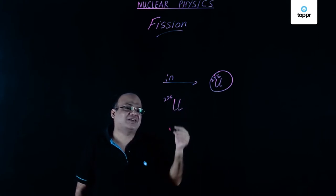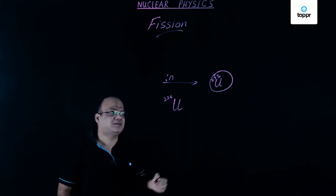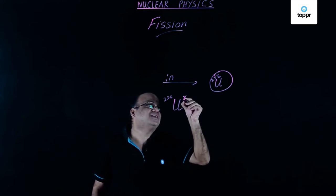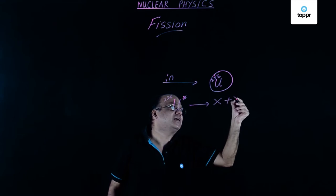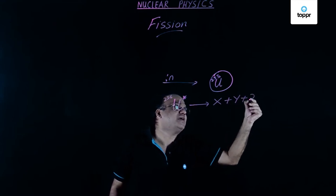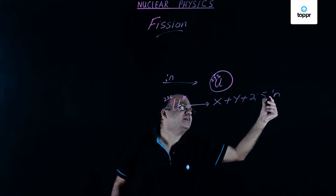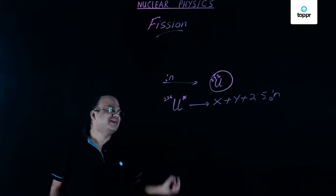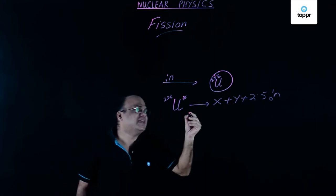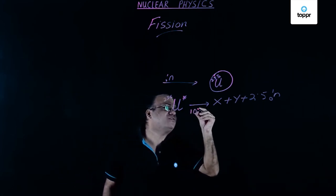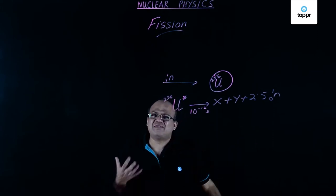This nucleus is unstable. It breaks into some fragment X plus fragment Y, and you get 2.5 neutrons on average. This takes place in 10 to the power minus 12 seconds — very, very fast.